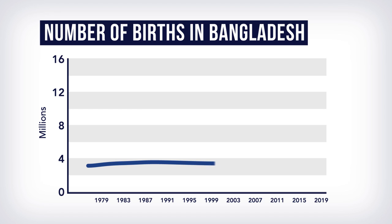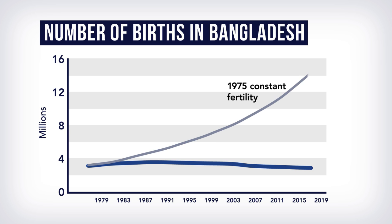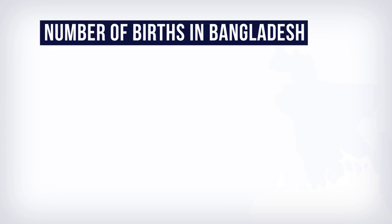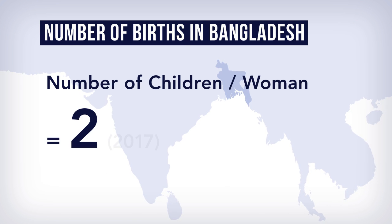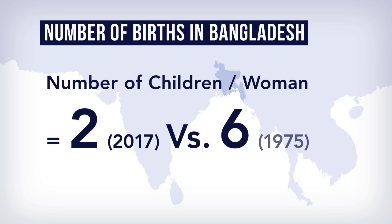Between 1975 and 2017, the number of births has been fluctuating between 3 and 4 million per year. However, if the fertility conditions in 1975 had remained the same, the number of births in 2017 would have been about 14 million. The reason for the difference is lower fertility — a woman has on average 2 children in 2017, compared to 6 in 1975.